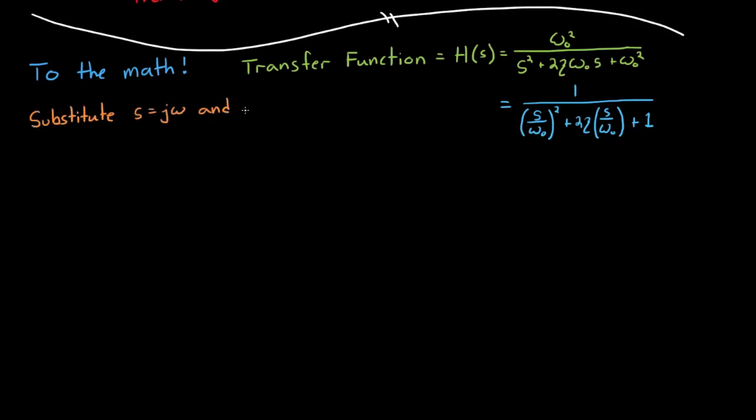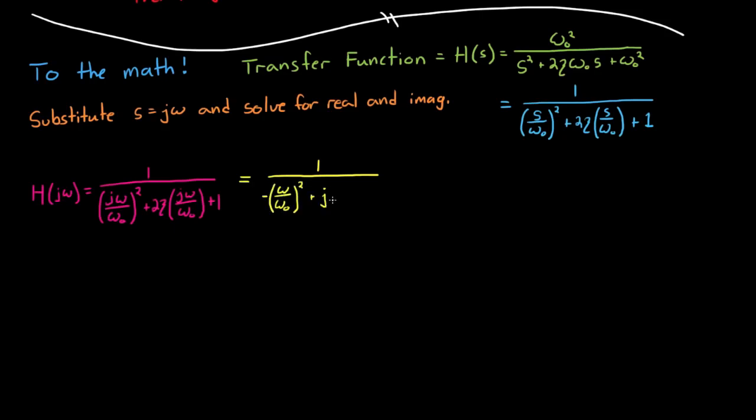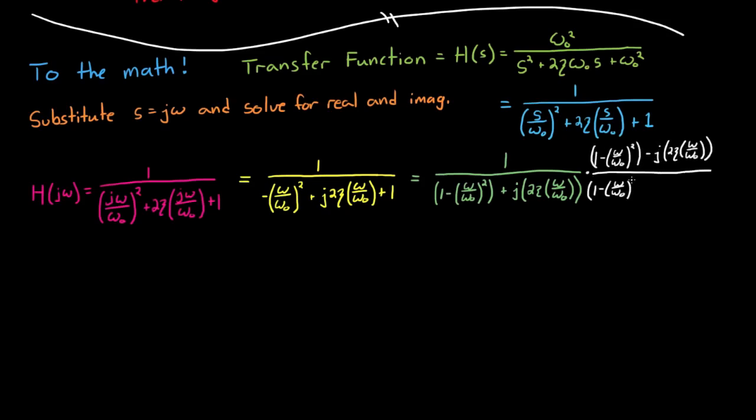First, you have to substitute s equals j omega, and then solve for the real part and the imaginary part of the equation. The only difference here, though, is that this equation is a bit more complicated than the previous ones we looked at, so the algebra can get a bit unwieldy. I assure you, though, I'm performing the same mathematical steps that I did in previous videos. I always recommend you trying this on your own. One, to verify that my math is correct, and two, practicing it helps you retain the knowledge.